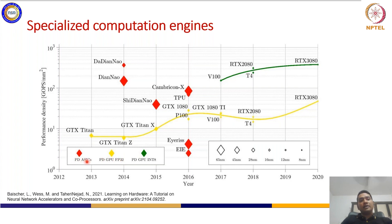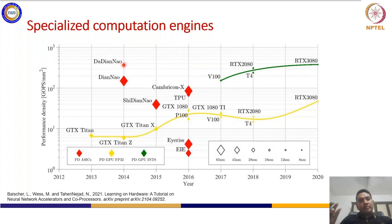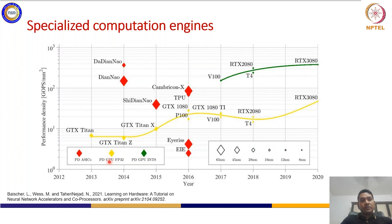ASICs are a highly customized bit-level implementation of computing systems for AI benchmarks, which is why the performance density is much higher in ASICs. Because they are only specialized in running AI benchmarks for a given data type or given precision, their performance density — GOPs per millimeter squared — is much higher. GPUs are much more generalized and can accelerate both AI benchmarks and video or graphics processing, achieving almost similar performance density nowadays.